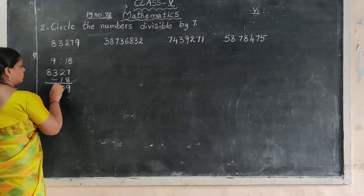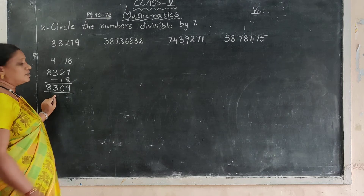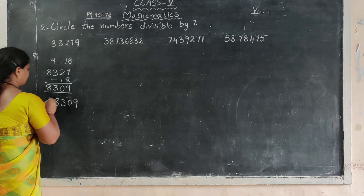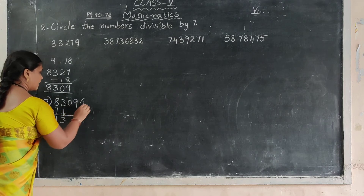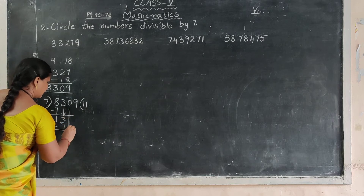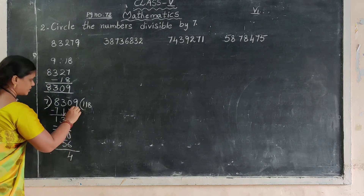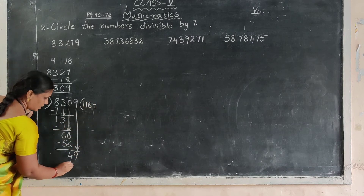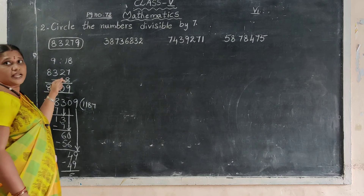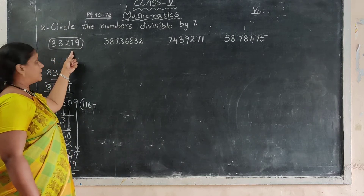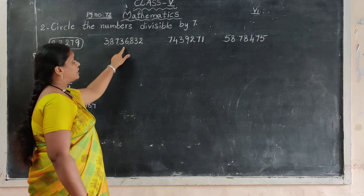The result is 8,309. Checking by dividing by 7: 8,309 is divisible by 7. So 83,279 is divisible by 7.